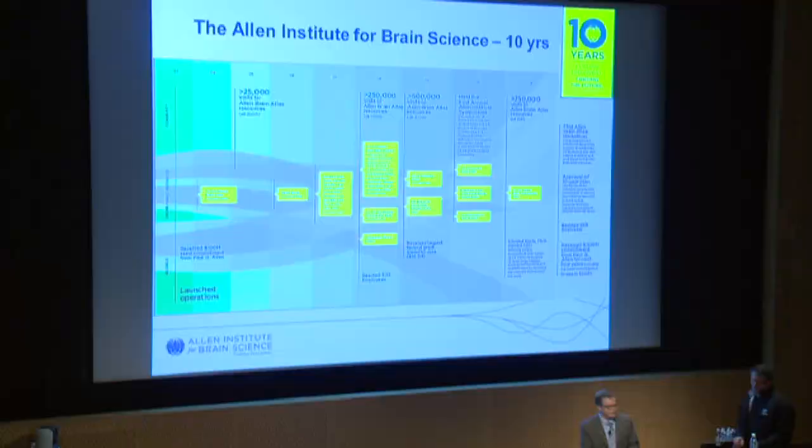Our next speaker is Gregor Eichele. The history with Gregor goes way back to the inaugural Atlas project. One of the real benefits in getting off the ground with such an aggressive project and timelines was that the technology was already well on its way to being developed and robust in Gregor Eichele's lab for doing automated in situ hybridization. Gregor was very involved early on in the Atlas project for a lot of technology transfer. The first thousand genes from the Allen Brain Atlas were generated in Gregor's lab at Baylor College of Medicine.